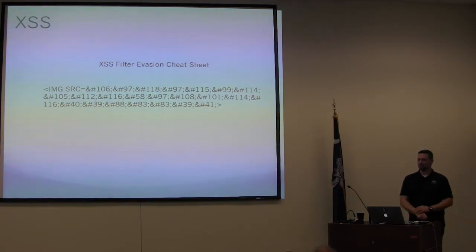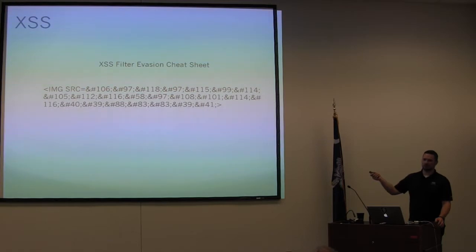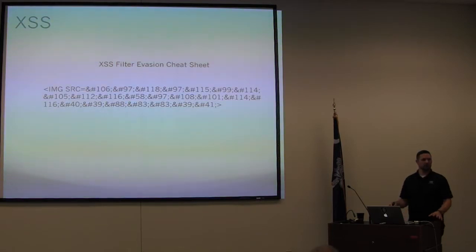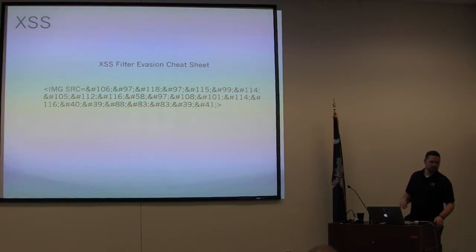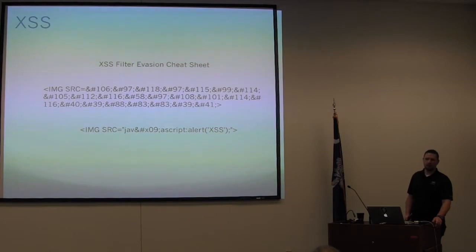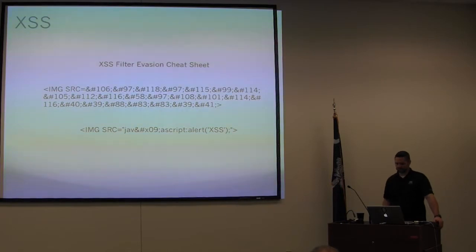There are examples of more complex cross-site scripting that you pick from the filter evasion cheat sheet. Different encoding types matter depending on what your target does — maybe they're in a different country with different encoding types, or they use different web technologies. One example is an embedded tab character for whitespace inserted into the middle of a JavaScript string — and that works, because the browser doesn't care what a tab character is. So you can keep right on going. It's extremely powerful.